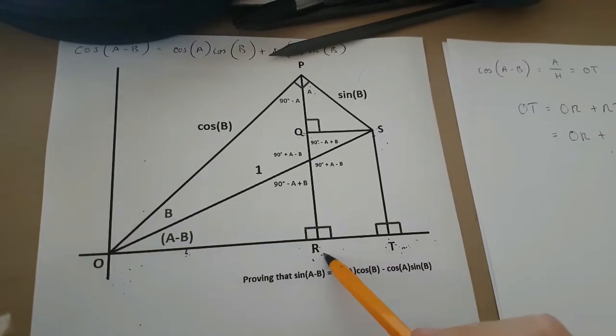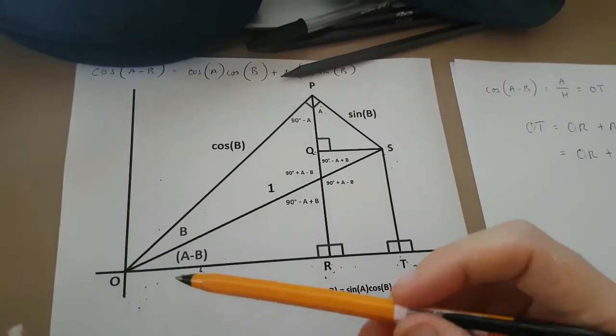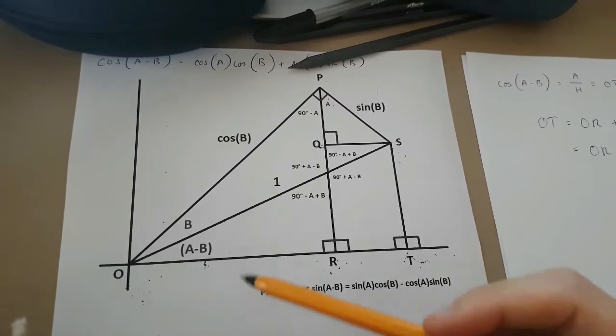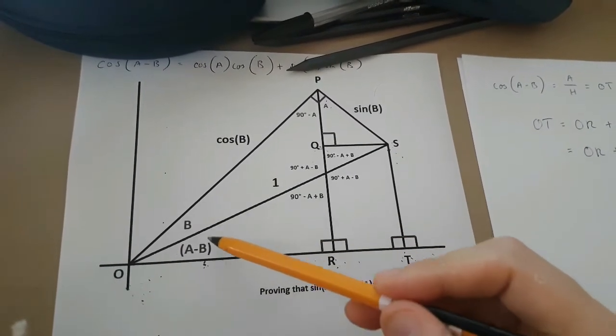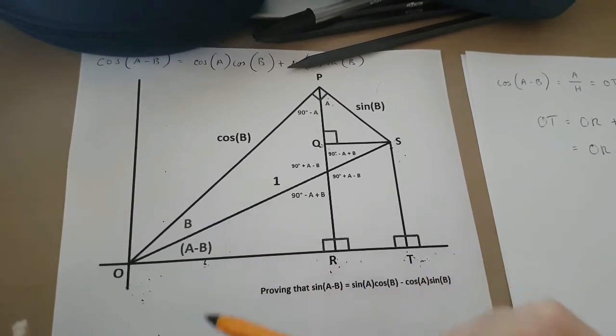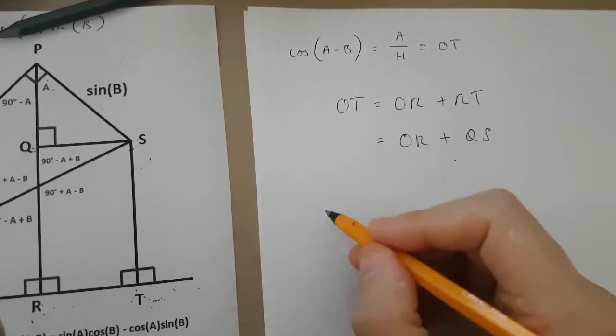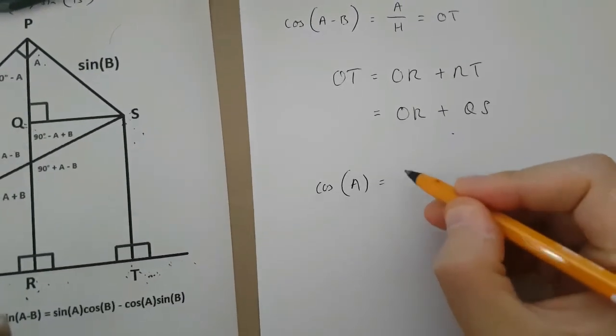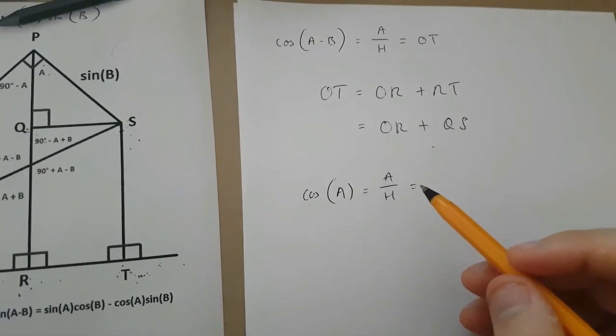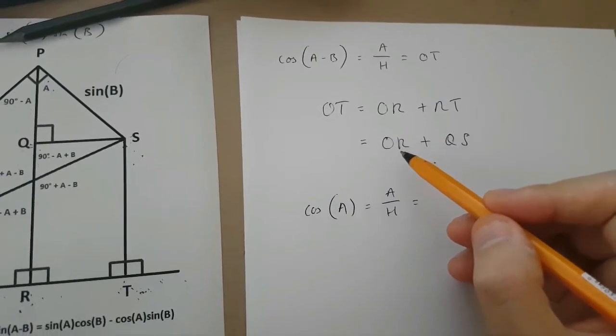OR is this length over here, and it's part of the triangle OPR, which has an angle A, which is this entire angle over here, B plus (A-B) in brackets. Now, if we write down cos(A) equals adjacent over hypotenuse, we can get an equation which describes OR.